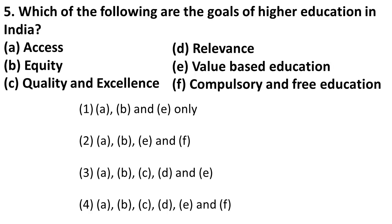The next question is: which of the following are the goals of higher education in India? Access — yes, access for everyone is a goal. Equity — yes, everyone should be involved. Quality and excellence — yes. Relevance to modern times — yes. Value-based education — yes. However, compulsory and free education is NOT a goal for higher education; the Indian government only incorporates that for primary education. So the correct options are A, B, C, D, and E — option three.